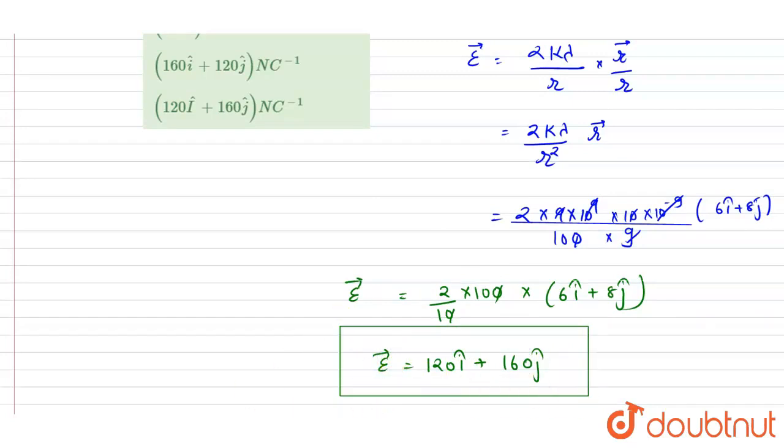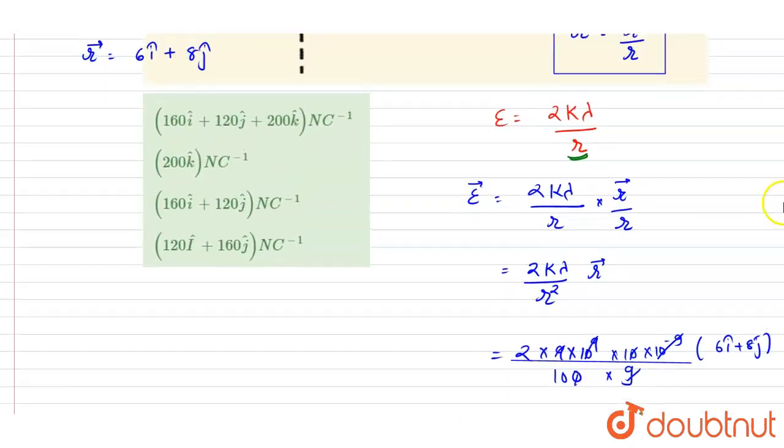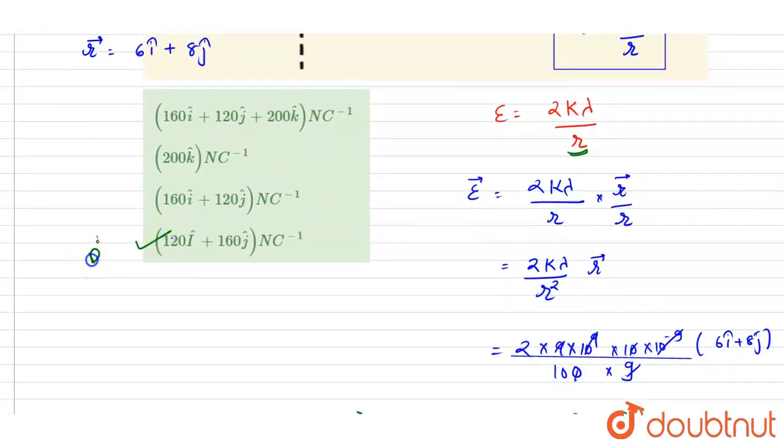Now you can check for the option here: 120î + 160ĵ - D is the correct one. Thank you.